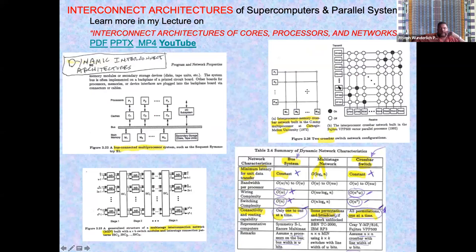In that same lecture covering static interconnect architecture, we'll also cover dynamic interconnect architecture. The most common dynamic interconnect is the bus — a shared roadway where everything can connect, but not everybody can communicate simultaneously. You need a bus controller, arbitration, and electrical isolation using tri-state buffers.